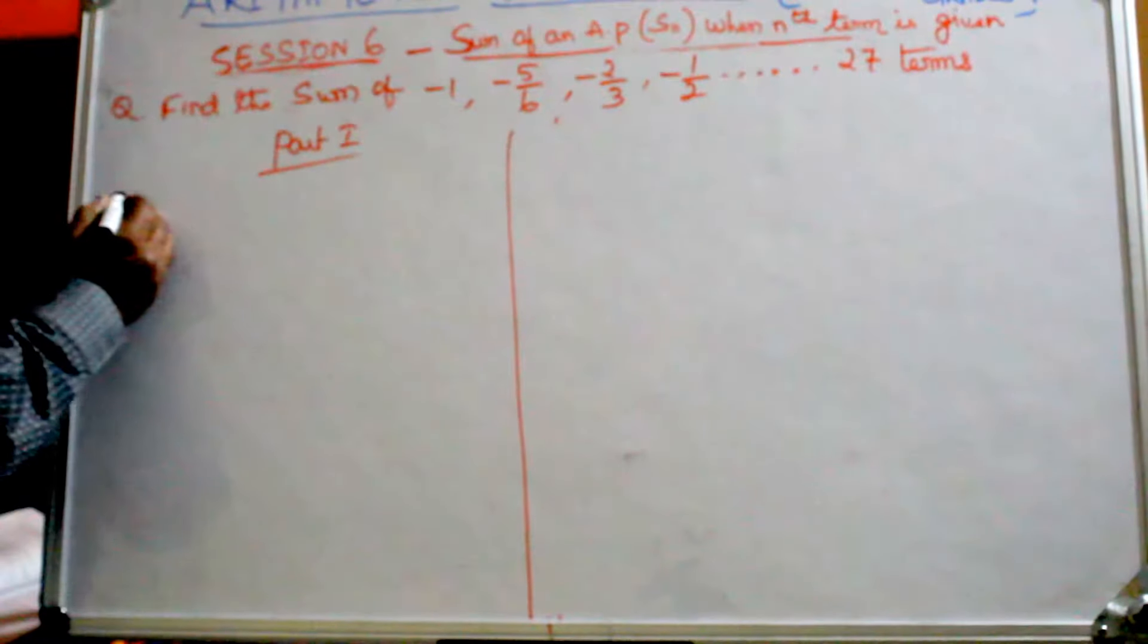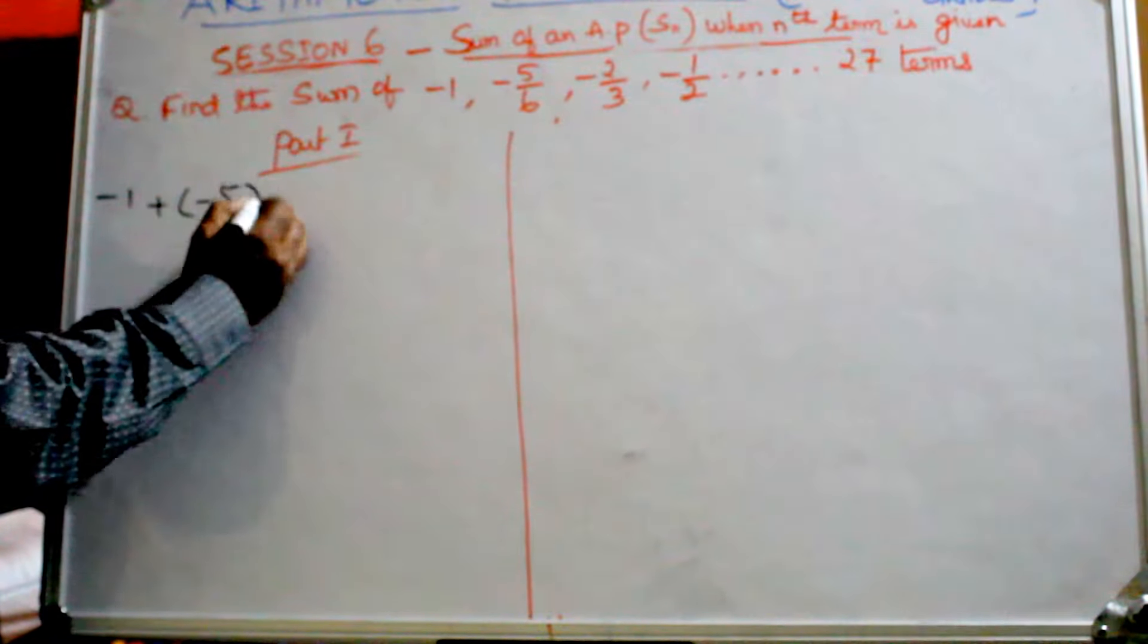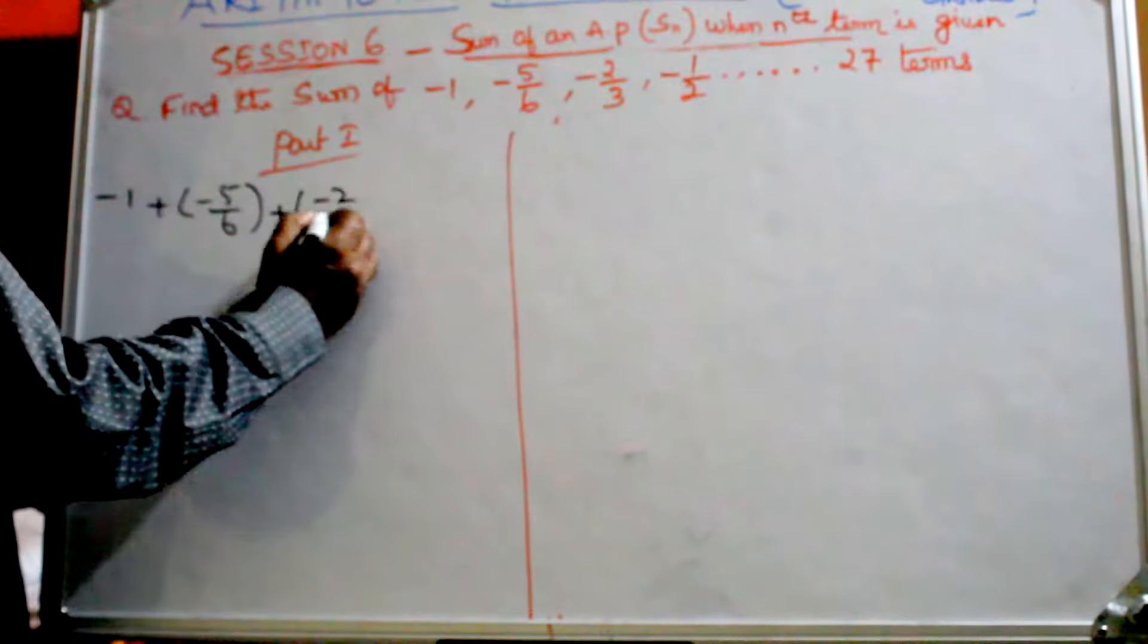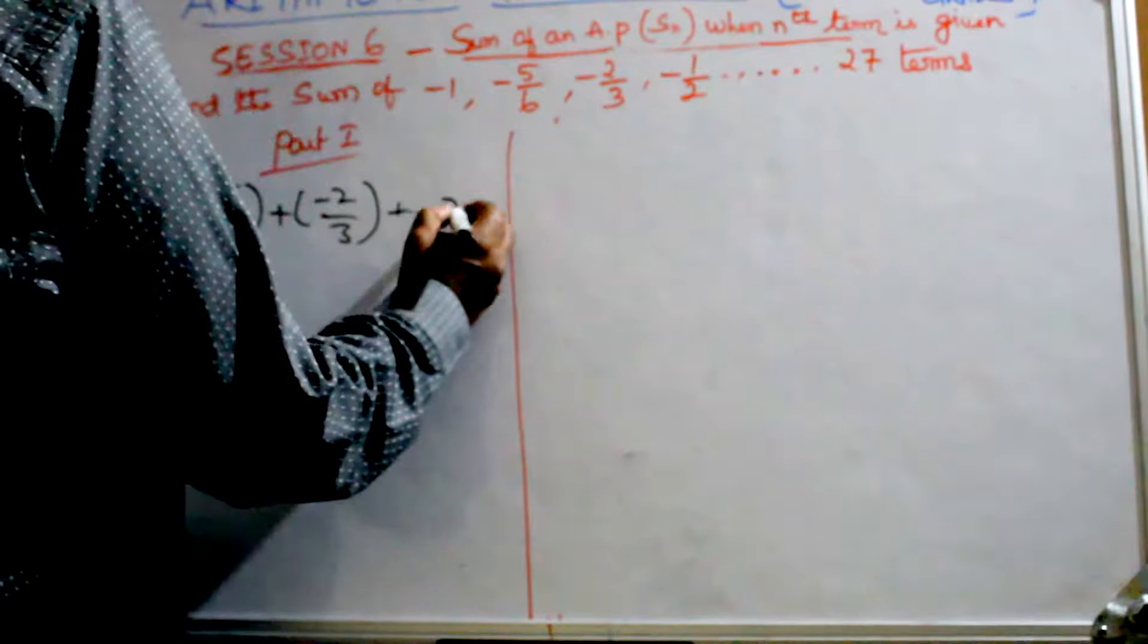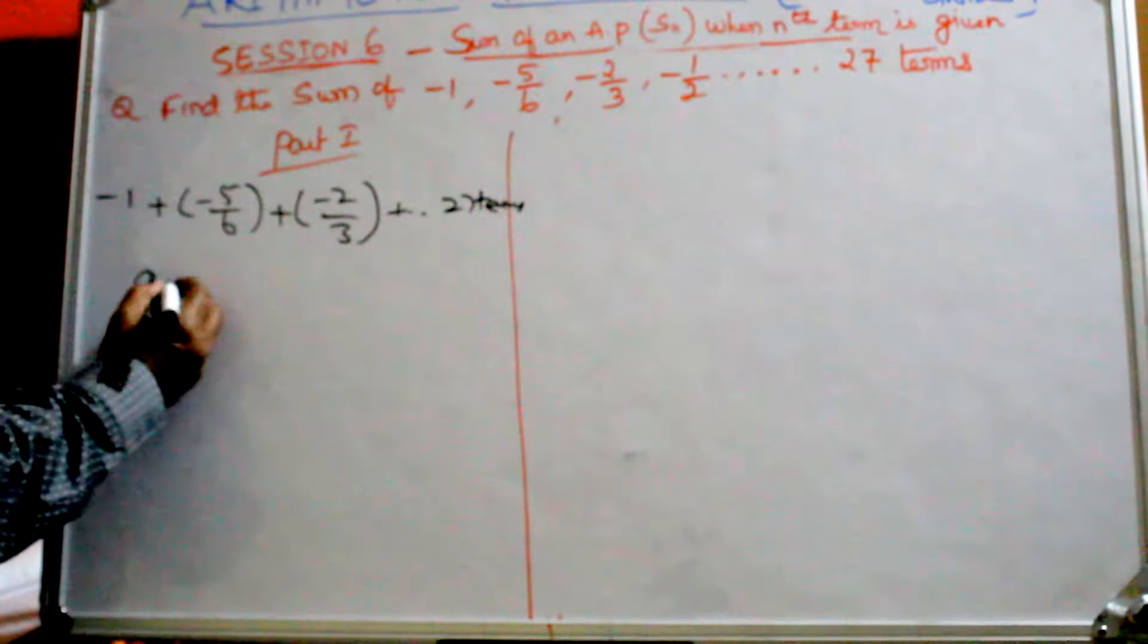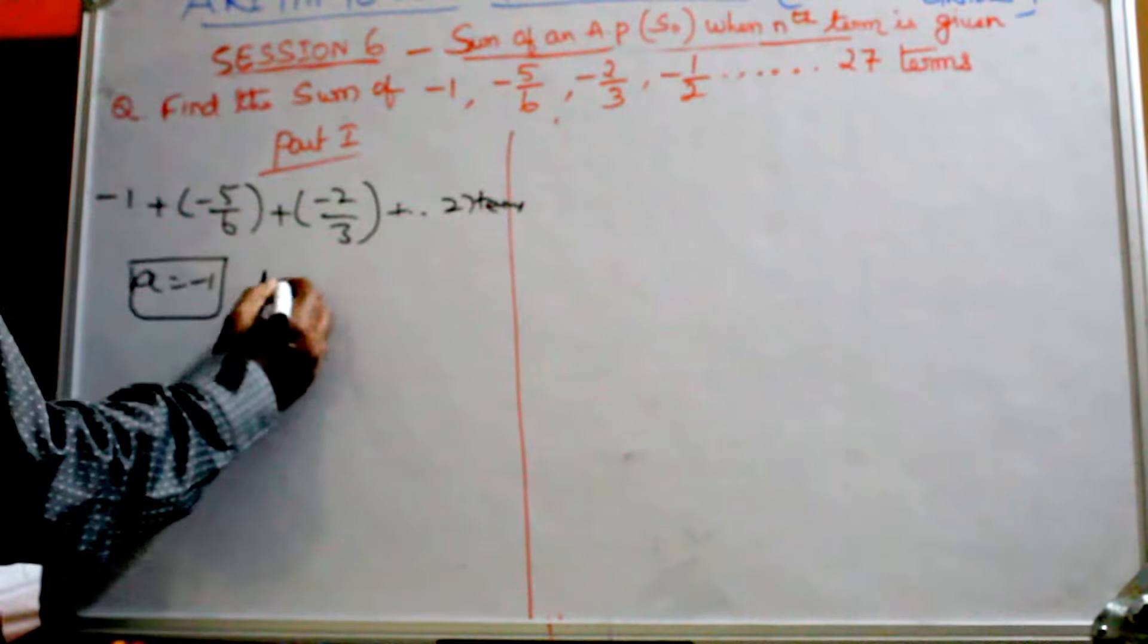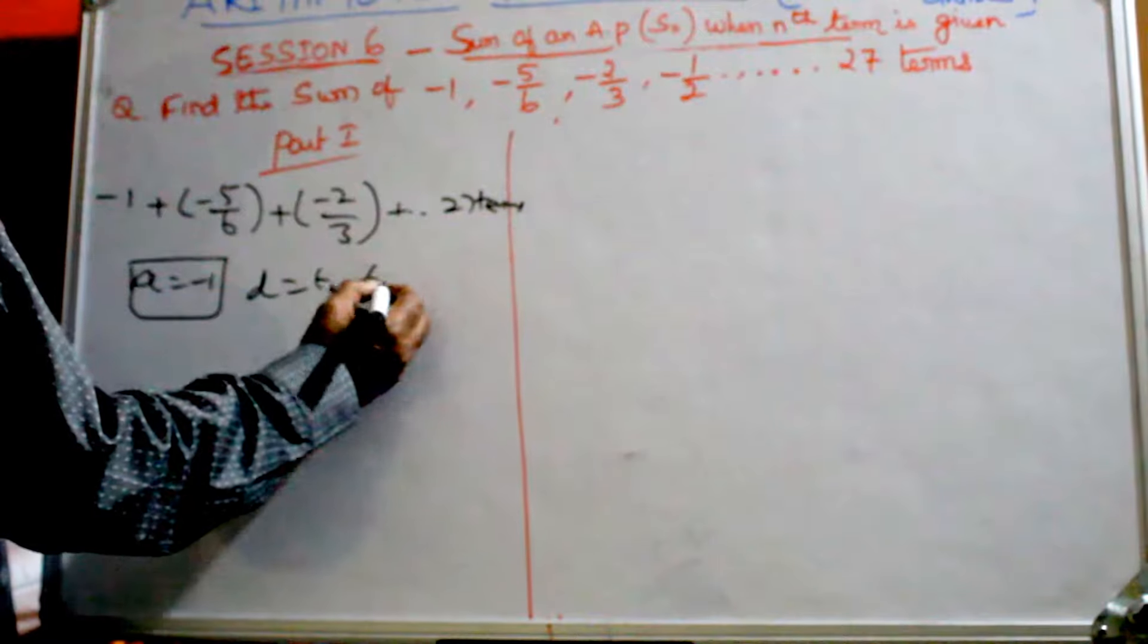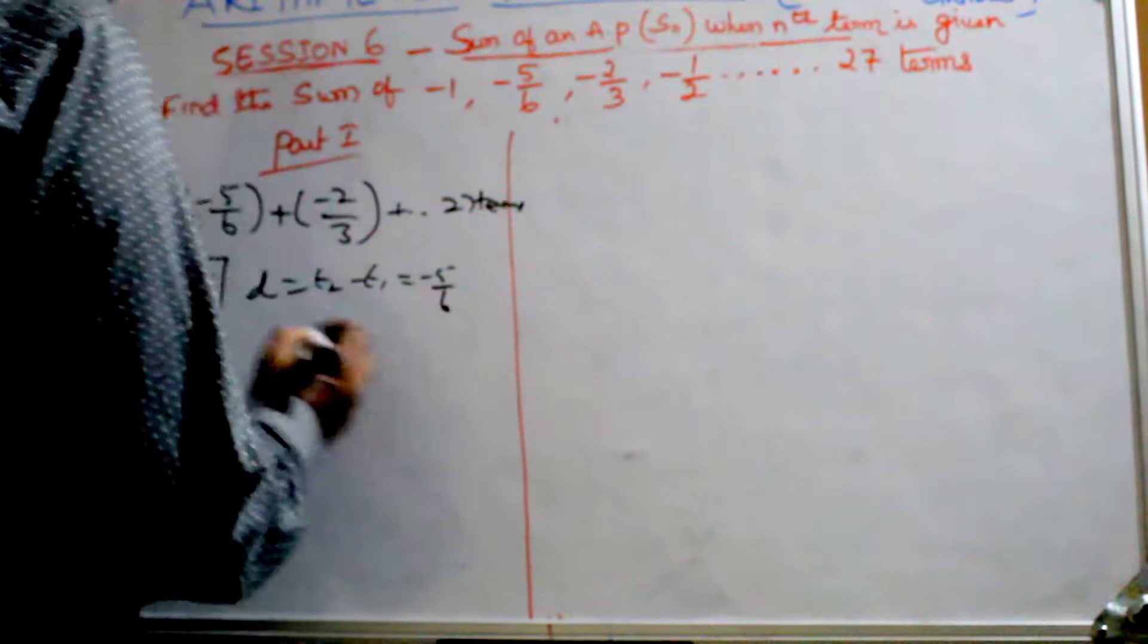Part 1: You just make this as plus. You can write the first three terms: -1 + (-5/6) + (-2/3) + ... up to 27 terms. Now here, A equals -1. D is T2 minus T1, which is -5/6.